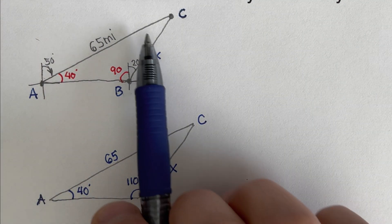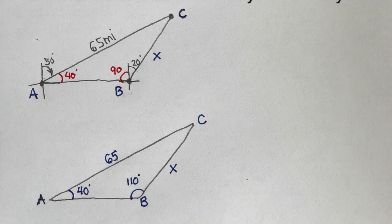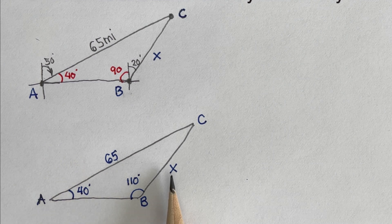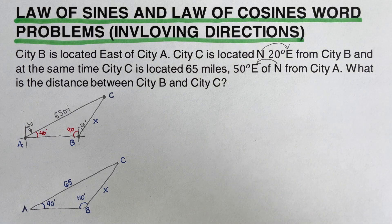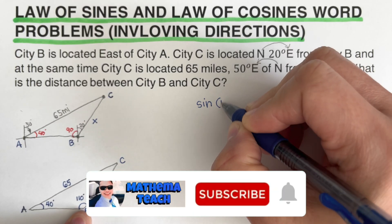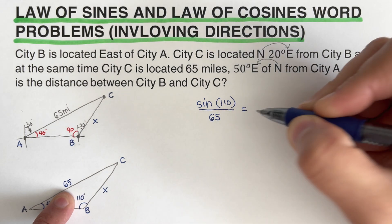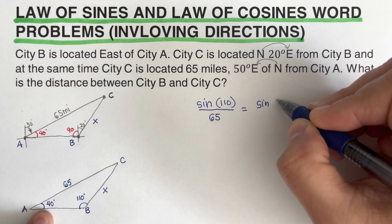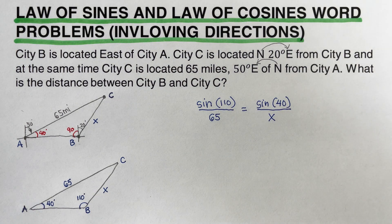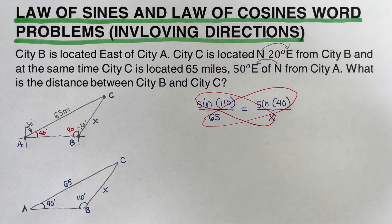Redrawing the triangle, we solve for x using the law of sines. The angle of 110 degrees is across from the side of 65 miles, and 40 degrees is across from x. Setting up: sine(110°)/65 = sine(40°)/x. Cross-multiplying gives us x = 65 × sine(40°) / sine(110°).